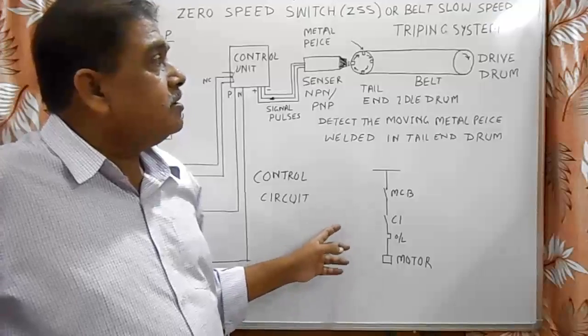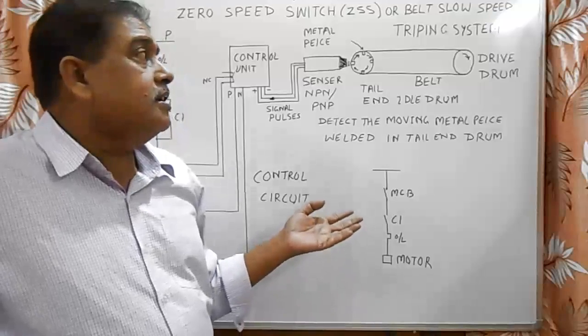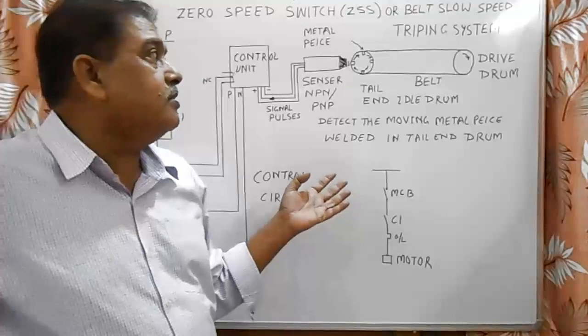This makes the safety of the conveyor belt. Because of jamming, if the speed decreases, the conveyor will be safe with the help of tripping.